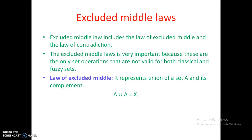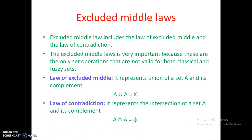The law of excluded middle states that A union A-bar equals the universe of discourse X. A-bar is the complement of A — in the whole universe of discourse, if we remove A, the remainder is A-bar. Combining A and A-bar gives us the entire universe of discourse. The law of contradiction states that A intersection A-bar equals the null set (phi). Since A-bar is everything except A, their intersection has no common area, giving us the null set.